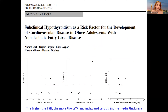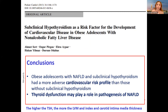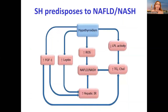Another interesting part is the relation with non-alcoholic fatty liver disease (NAFLD). TSH showed a positive correlation with left ventricular mass, left ventricular mass index, and carotid intima-media thickness — especially in those with NAFLD. The conclusion is that there is a greater cardiovascular risk profile in those with subclinical hypothyroidism, and even more interestingly, thyroid dysfunction might play a role in the pathogenesis of NAFLD.